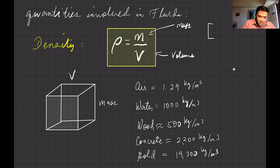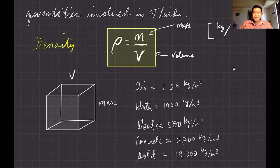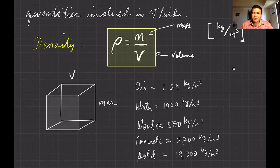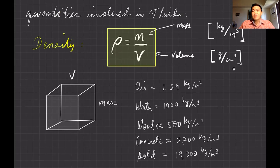The SI unit of density is kilograms per cubic meter. In chemistry labs dealing with smaller quantities, you might use grams per cubic centimeter or grams per milliliter. Some example densities: air is one of the least dense substances, and water has a density of 1000 kilograms per cubic meter.